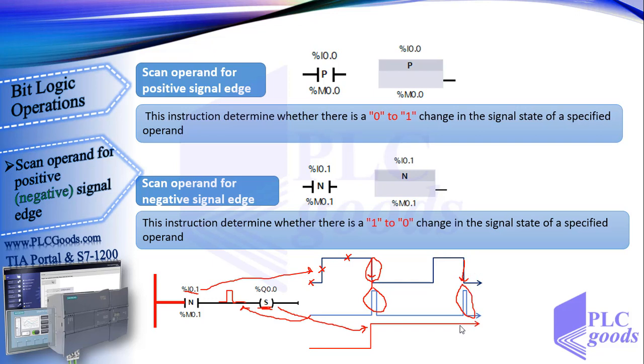Pay attention: a set instruction is used in this program, so the Q0.0 output remains one after the first pulse.